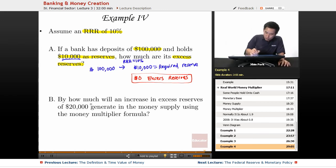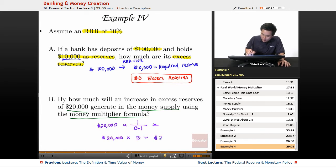Now, by how much will an increase in excess reserves of $20,000 generate in the money supply using the money multiplier formula? Again, very simple equation. You have $20,000 in excess reserves, multiply by 1 over RRR, which is 0.1. The multiplier is going to be 10 in this case, so you have $20,000 times 10, so the increase in money supply according to the money multiplier formula is going to be $200,000.